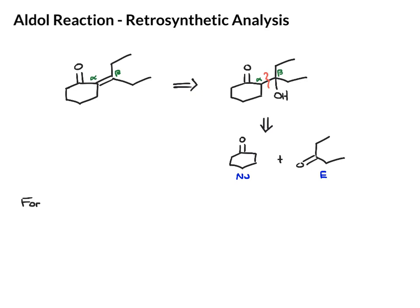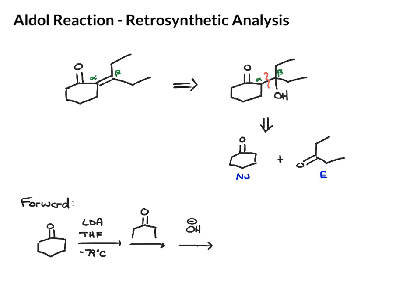So if we write this in the forward direction, I would start with cyclohexanone, first add LDA, then we can add our electrophilic ketone. And then to get the elimination product, we would add base and heat. Just to note, the heat isn't always written in, but usually we'll heat it because heat does favor elimination steps.